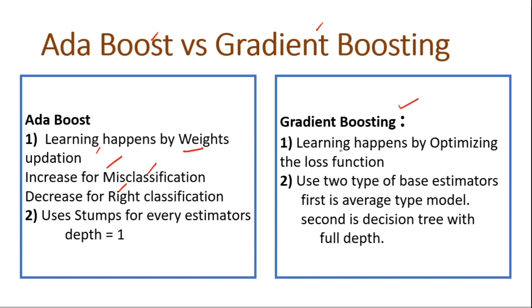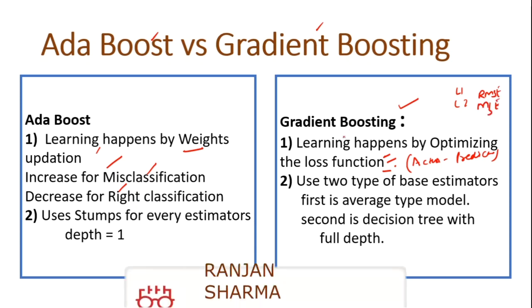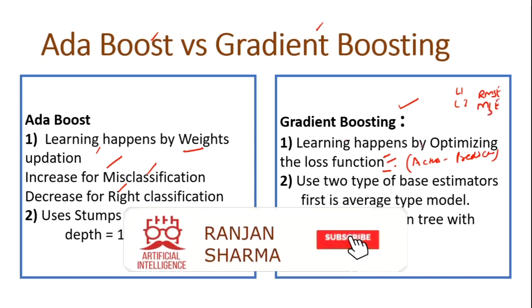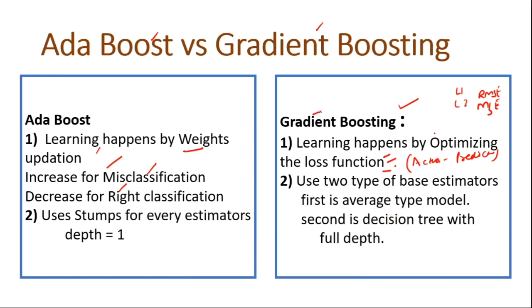In gradient boosting we are not using weights. The learning happens by optimizing the loss function. Loss is actual minus predicted — that is the loss function, error function, or cost function — all the same thing. We can use any loss: L1 loss, L2 loss, RMSE, MSE. In gradient boosting, learning happens by optimizing the loss function, similar to how gradient descent minimizes loss.